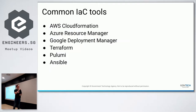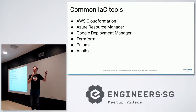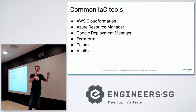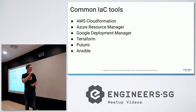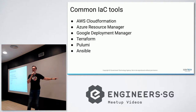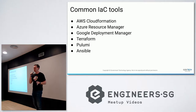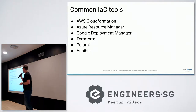For those who are familiar, there are a number of popular IAC tools. Each of the cloud providers has their own set of tools, and each one is different. Terraform is another one — HashiCorp is coming to speak at Stack next year. There's also Pulumi, which uses actual source code to deploy, and Ansible, which is typically for configuration management but also stretches into infrastructure as code.